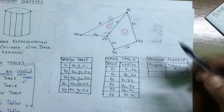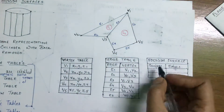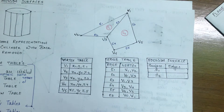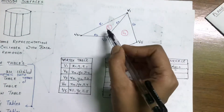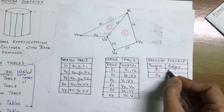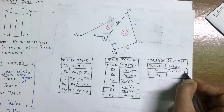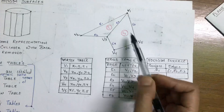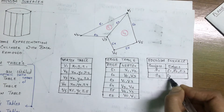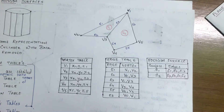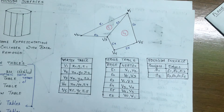I have two surfaces S1 and S2. For S1 the associated edges are E1, E2, and E3. For S2 the associated edges are E3, E4, E5, and E6. This is how a polygon table is represented.